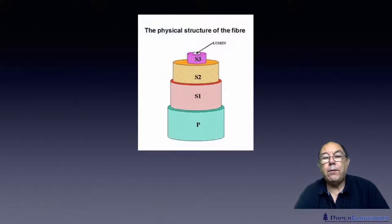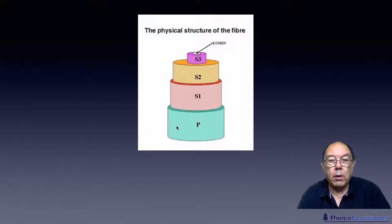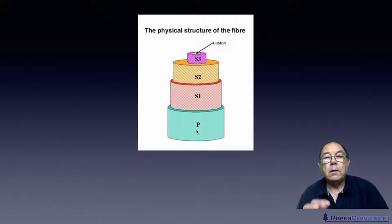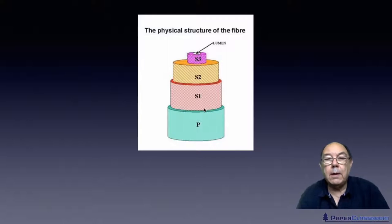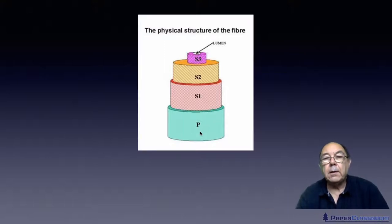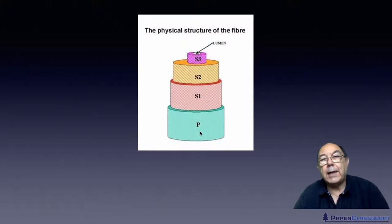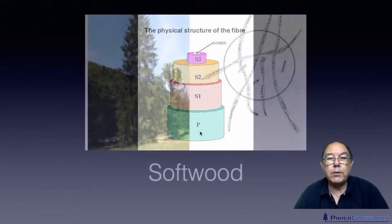All fibres have got four walls: an outer primary wall and then an inner secondary S1, S2, S3, and a lumen. What's different is the orientation of the fibrils in each wall and the numbers of layers in each wall. We'll talk about those things later on. That's what fibres really have in common and now we'll start to have a look at some of the differences.